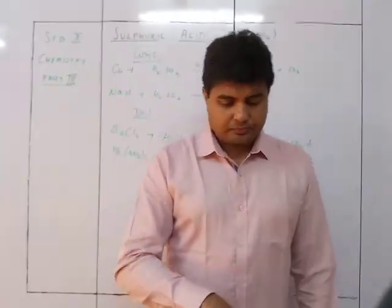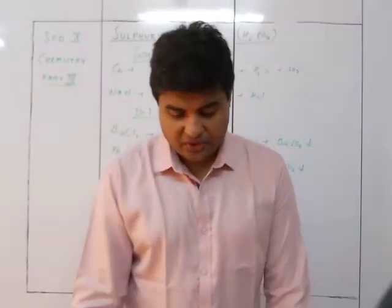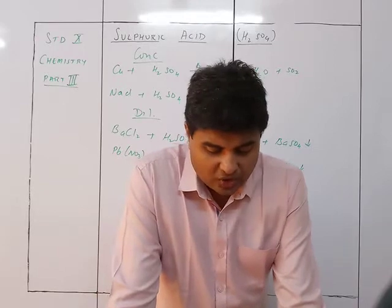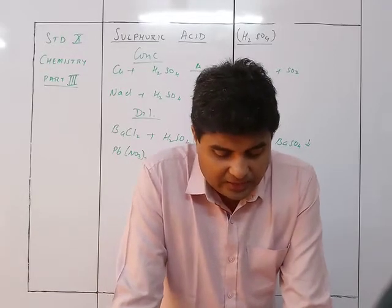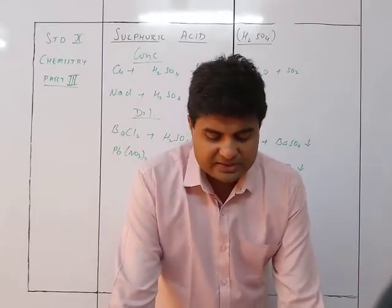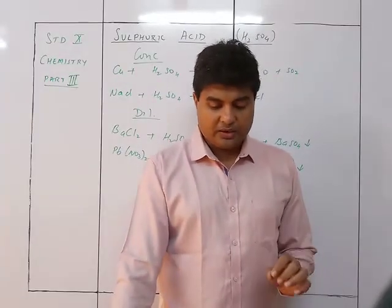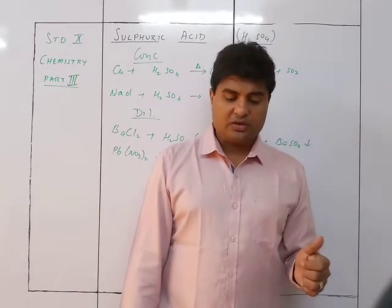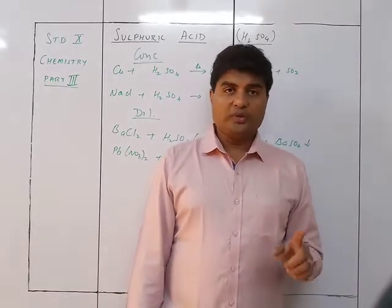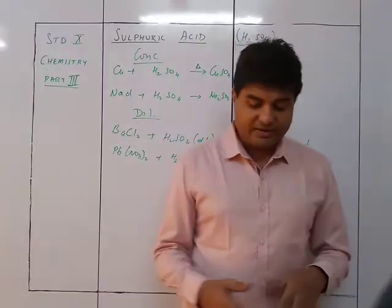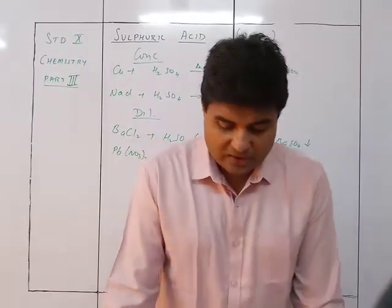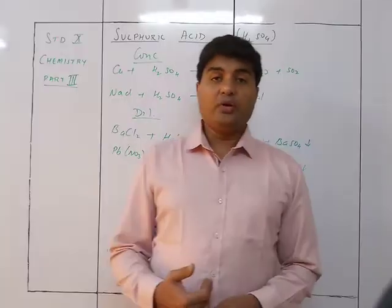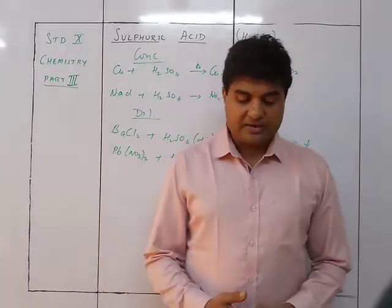HCl is a reducing agent — it reacts with oxidizing agents to give chlorine gas. For example, HCl is oxidized by MnO₂: removal of hydrogen takes place, so MnO₂ is the oxidizing agent and gets reduced while HCl acts as the reducing agent.